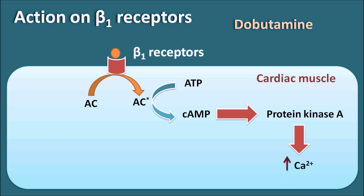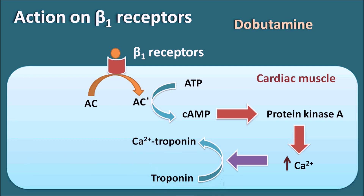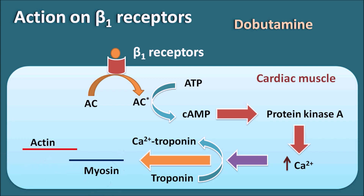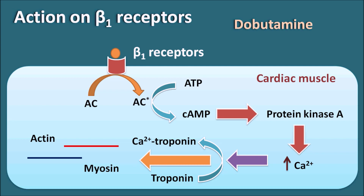As protein kinase A is activated, it increases the intracellular calcium in the cardiac muscle. Calcium, because of its ability to form a complex, can form a calcium-troponin complex, where troponin forms a block between actin and myosin. As the troponin is removed, actin and myosin can slide on each other so that cardiac muscle undergoes contraction. In this way, Dobutamine acts as an agonist on beta-1 receptors, increasing intracellular calcium, force of contraction, and cardiac output — showing significant inotropic activity.